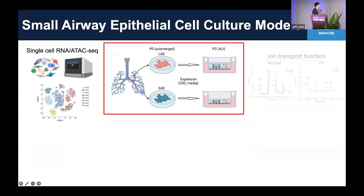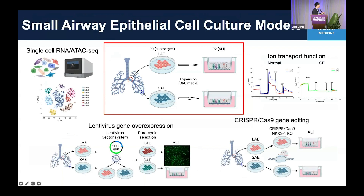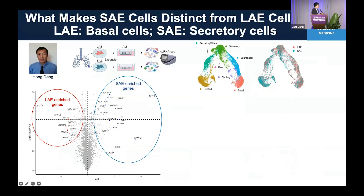We use this model for many things including single-cell RNA sequencing and ATAC-seq characterization, and taking advantage of the in vitro system, we measure CFTR function in these cultures and also perform gene overexpression and CRISPR-Cas9 gene editing. I'm going to introduce some of the data from here.